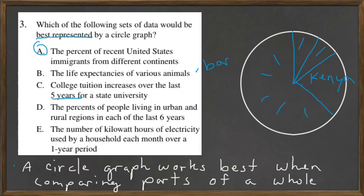In D, you see percents, but they want to know the data in each of the last six years, so that might be better represented in a bar graph. And E, the number of kilowatt hours of electricity used by a household each month over a one-year period — when I get my power bill, they always put that in a bar graph. So that's probably better as a bar graph as well.